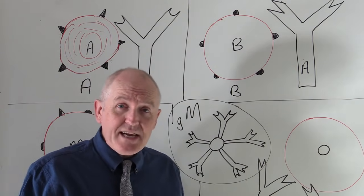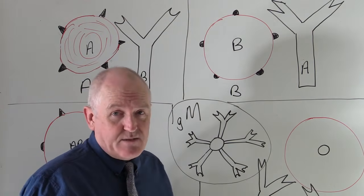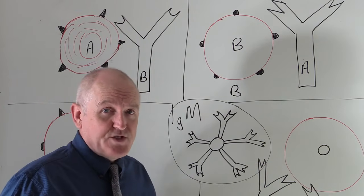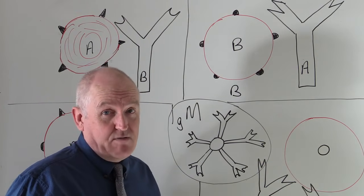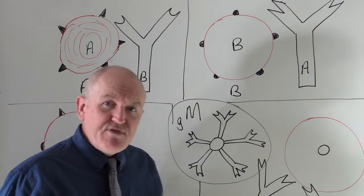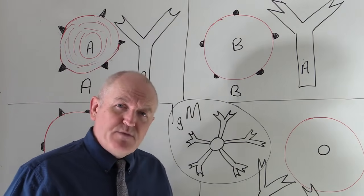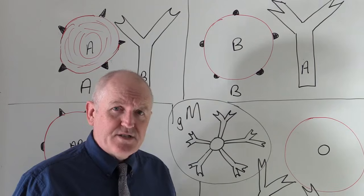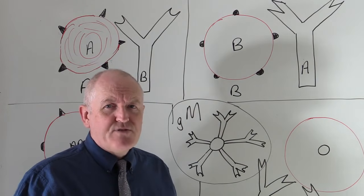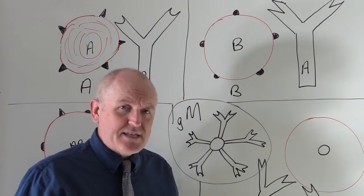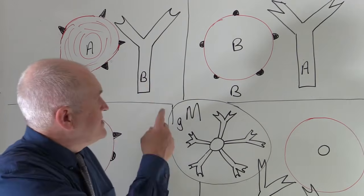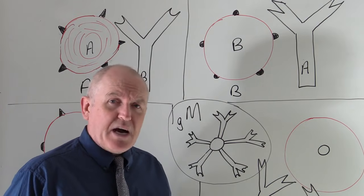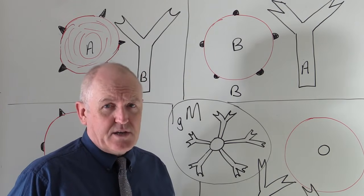These antibodies develop during the first few months to the first year of life. When a neonate is born, they don't have these antibodies, but they develop them in the first months and first year of life. The reason they develop them is probably because they're exposed to bacterial infections and different sorts of food that stimulate the development of the antibodies. We describe them as naturally occurring.